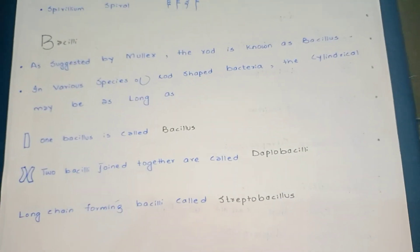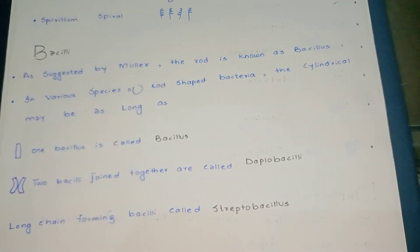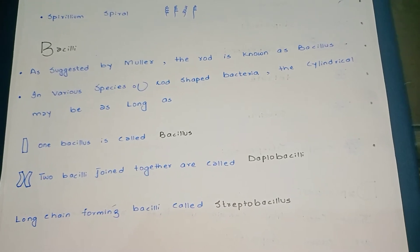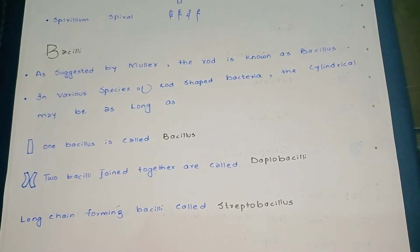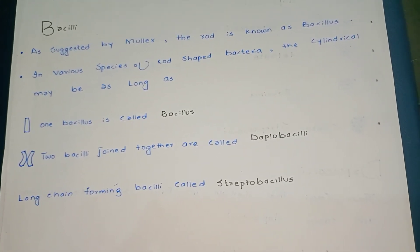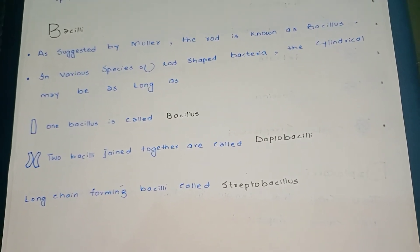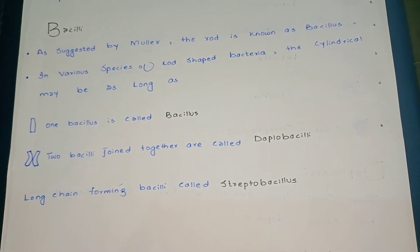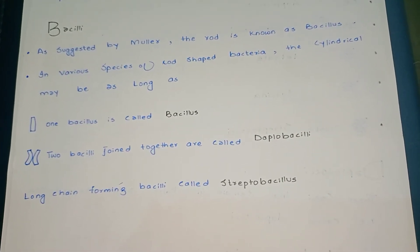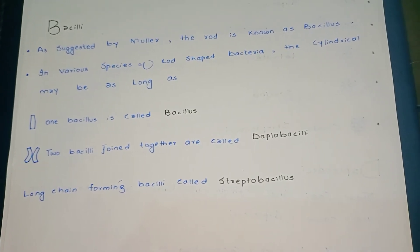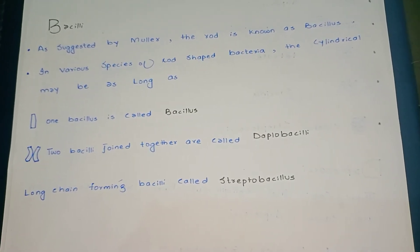The bacillus, as suggested by Muller, is the rod-shaped bacterium. If we have one rod, we call it bacillus. If we have two bacilli joined together as a pair, we call it diplobacilli. If we have a long chain of bacilli, we call it streptobacillus.